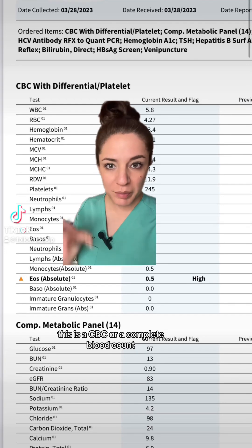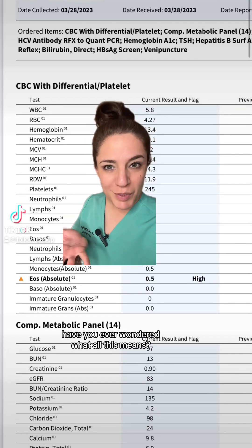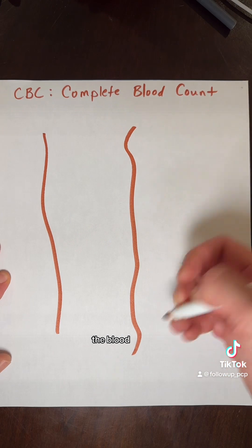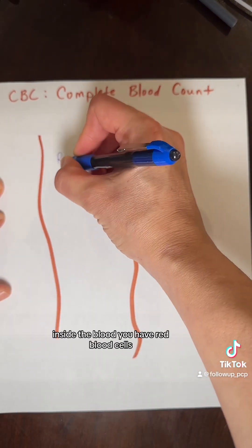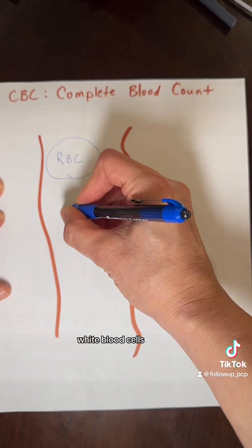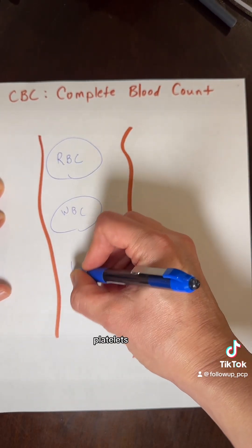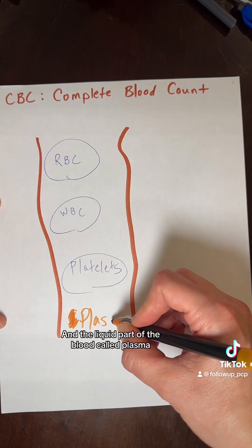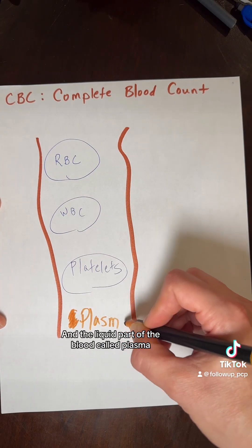This is a CBC, or a complete blood count. Have you ever wondered what all this means? You're about to find out. Inside the blood you have red blood cells, white blood cells, and platelets in the liquid part of the blood called plasma.